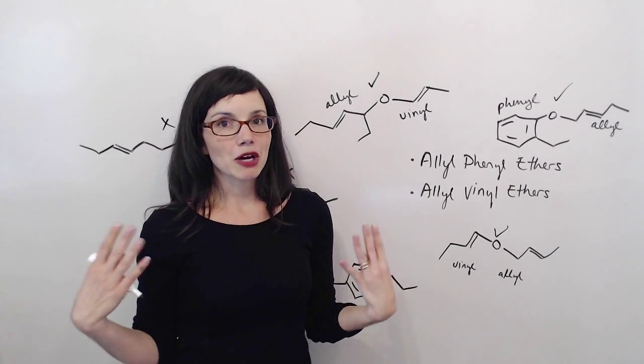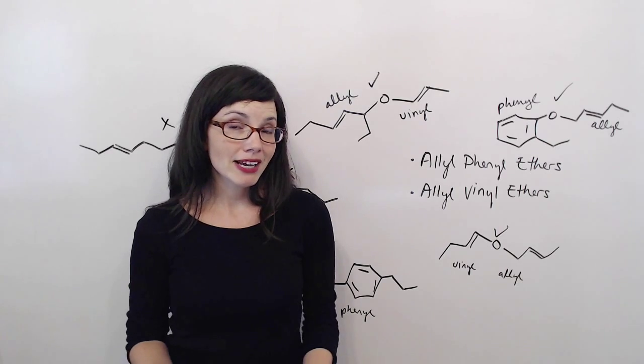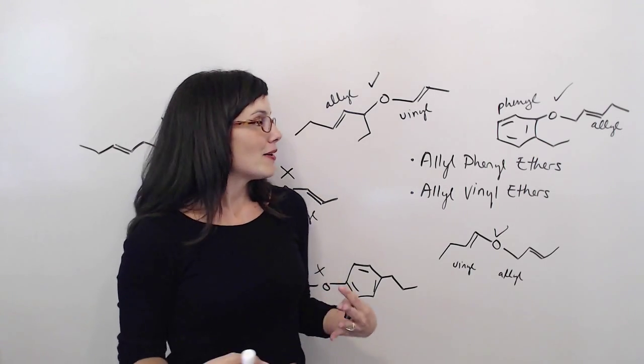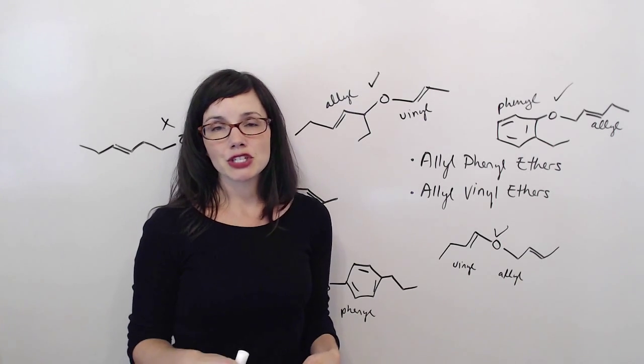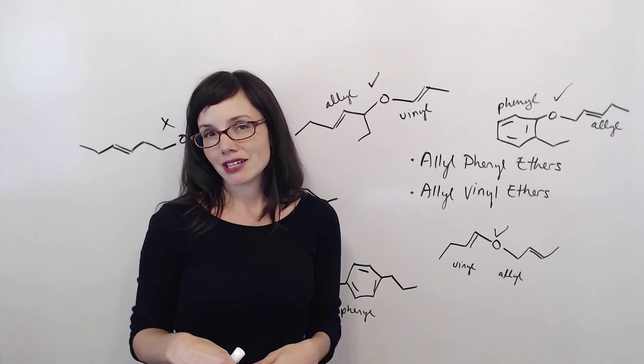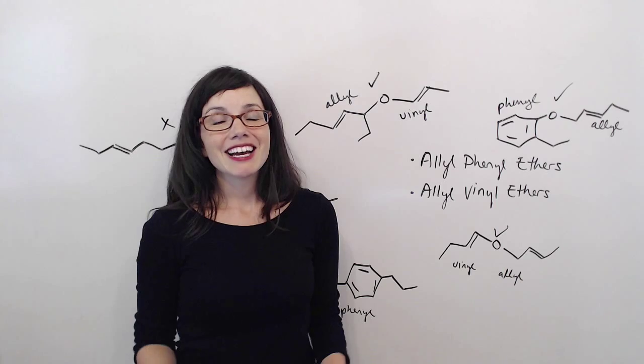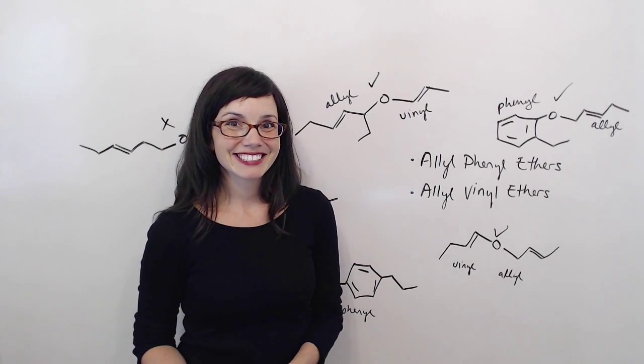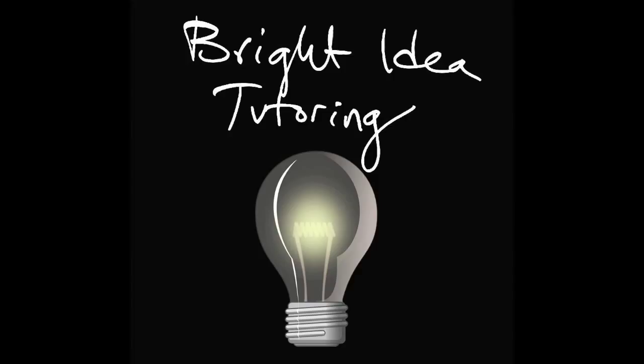Hopefully this practice helps a little bit with identifying the right kind of molecules that you can use for the Claisen rearrangement. Now for part two, I'm just going to quickly show you what the products of the Claisen rearrangement are supposed to look like. And then we'll spend quite a bit of time on the mechanism of this reaction. We'll see you next time.